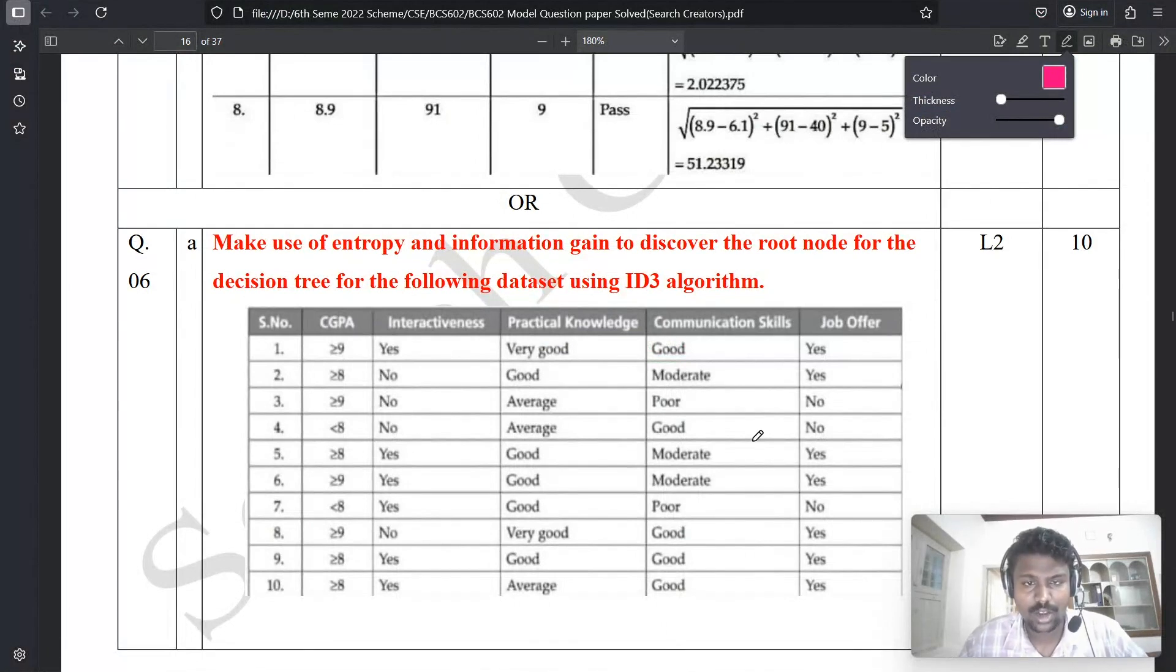Hello everyone, welcome back to Search Creator YouTube channel. In the previous video, we discussed the 5b question. The subject code is BCS602 and the subject name is Machine Learning. This is a model question paper solution series.